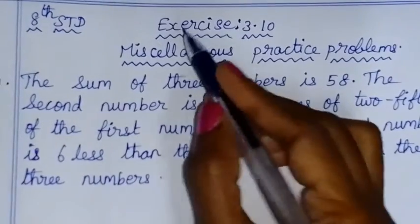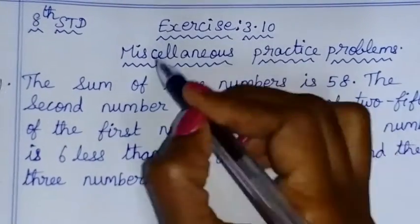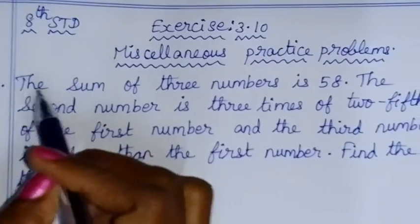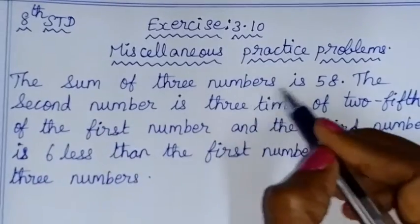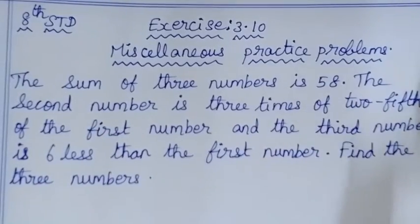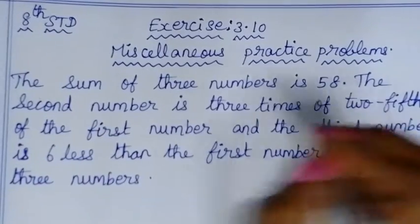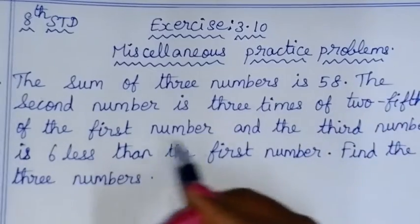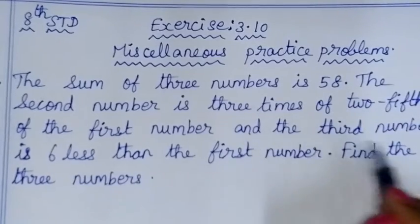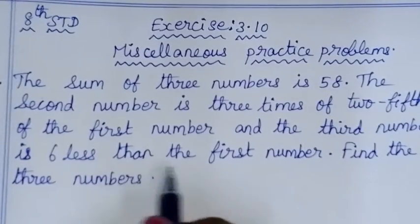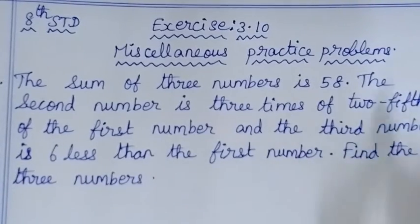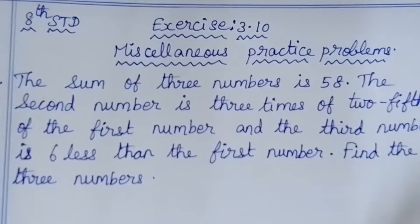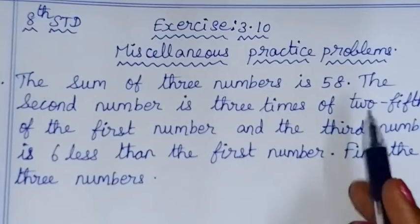Hello children. In this exercise 3.10, this is practice problem number 1. The sum of 3 numbers is 58. The second number is 3 times of 2 fifths of the first number, and the third number is 6 less than the first number. Given these 3 conditions, find the 3 numbers.